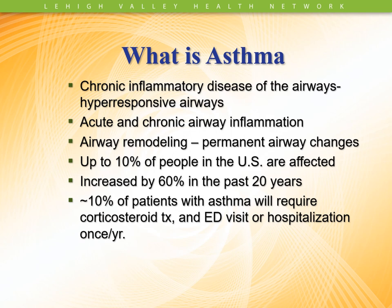So what is asthma? Asthma is a chronic inflammatory disease of the airways, which causes the airways to be hyper responsive and can cause increase in mucus secretion. There's always constant chronic airway inflammation in patients that have an exacerbation or an asthma attack. You can actually get acute inflammation on top of chronic airway inflammation. There's airway remodeling that occurs in these patients that can cause permanent airway changes and decreased lumen of the airway. Up to 10% of the United States are affected with asthma, and there's evidence that asthma has increased in the last 60%.